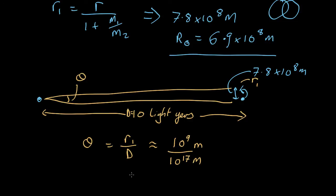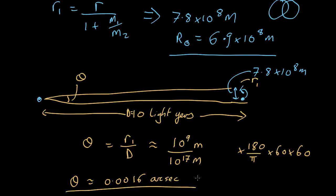To convert to degrees, we multiply by 180 over π. We'll actually need to convert it into arc seconds because it's going to be a very small angle in degrees. An arc second is 1/60th of an arc minute, which is 1/60th of a degree, so multiply by 60 × 60 to get arc seconds. For the reflex motion caused by something like Jupiter orbiting around a 1 solar mass star 10 light years away, we're talking about an angle of about 0.0016 arc seconds.